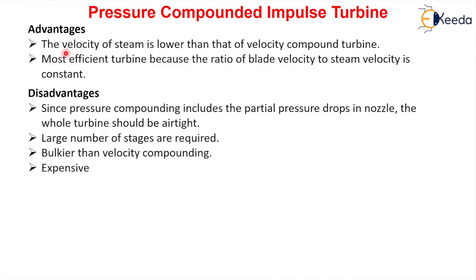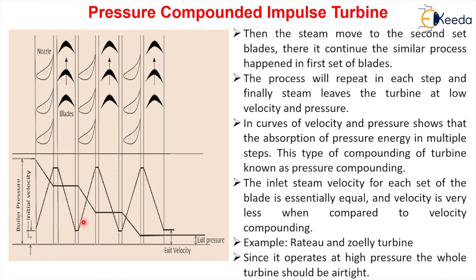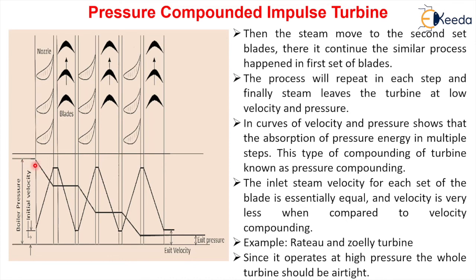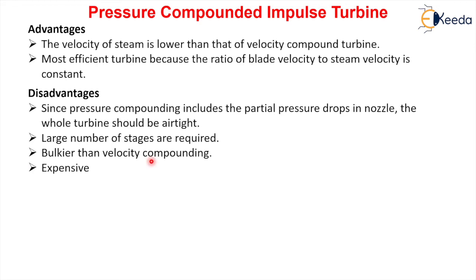Advantages of the pressure compounded impulse turbine: velocity of steam is lower than that of the velocity compounded turbine; it is the most efficient turbine because the ratio of blade velocity to steam velocity is approximately constant at each stage, giving approximately equal power at every blade. Disadvantages: since pressure drops partially in each nozzle, the whole turbine must be airtight as it operates at very high pressure; a large number of stages are required; it is bulkier than velocity compounding and more expensive.